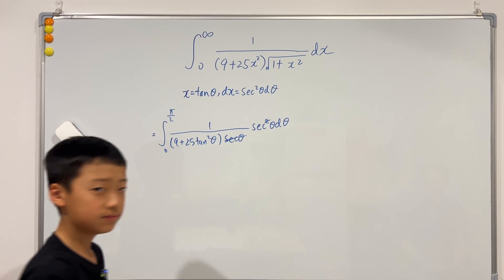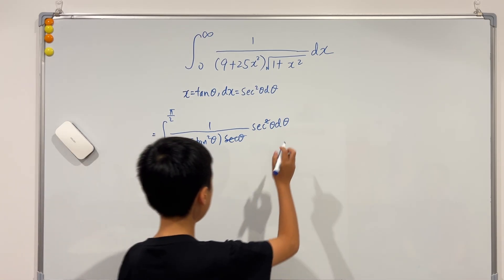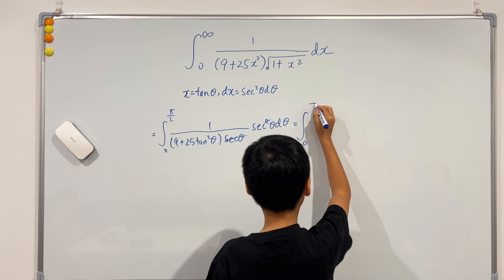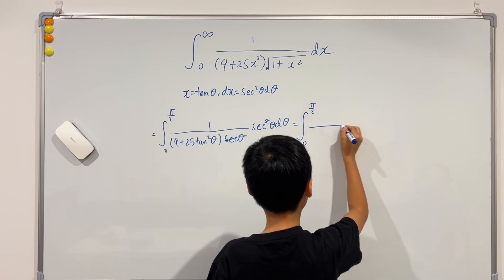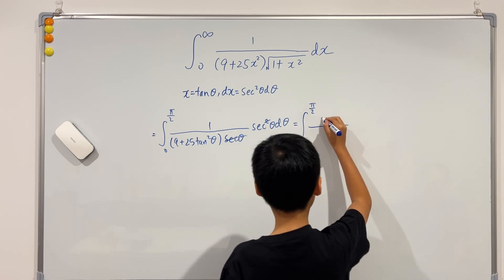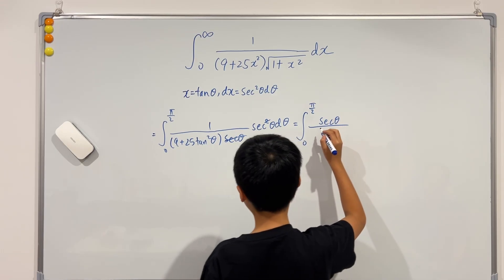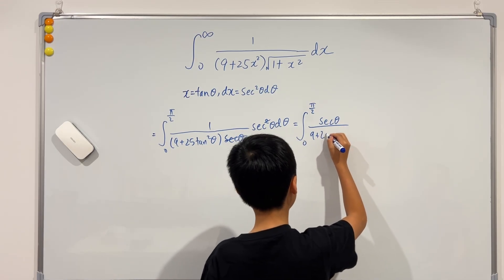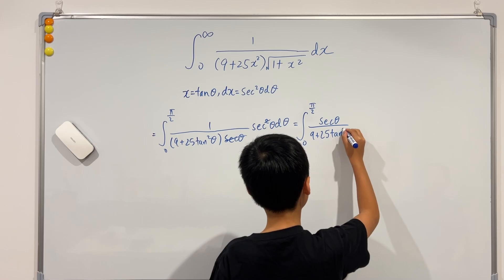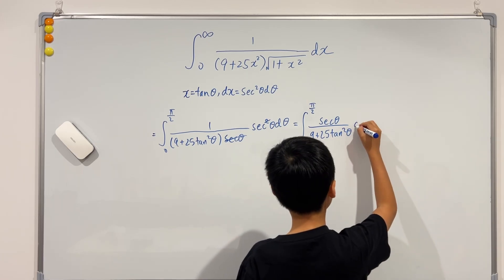So cancel, cancel, cancel. Now we have the top is just sec and the bottom is 9 plus 25 tangent squared d theta.